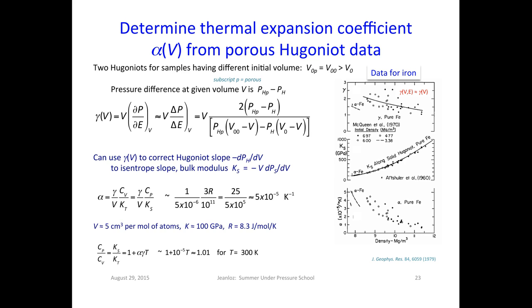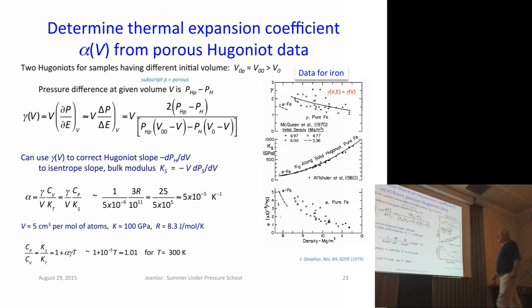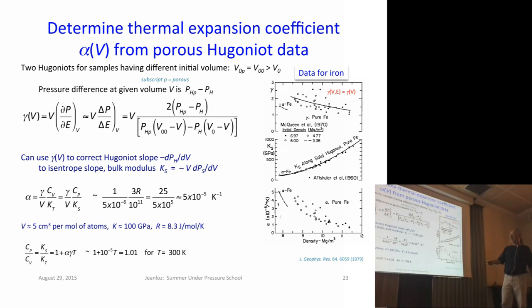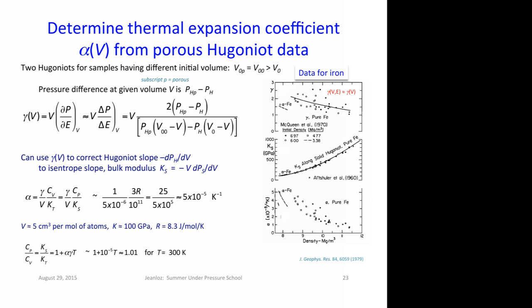We have the Grüneisen parameter and the bulk modulus derived from shockwave data. We can package these together to determine the thermal expansion coefficient. Thermodynamically, the thermal expansion coefficient is related to the Grüneisen parameter, volume or density, specific heat, and bulk modulus. The specific heat at high pressures and temperatures can be estimated — in first approximation it'll be the Dulong-Petit value for C sub V — and making corrections around that, plugging in typical numbers with a Grüneisen parameter between 1 and 2, bulk modulus about a megabar, you find thermal expansion coefficients on the order of 10 to the minus fifth per Kelvin, which is what is observed experimentally. Everything is measured, though we did make a theoretical estimate of heat capacity.